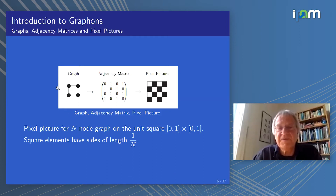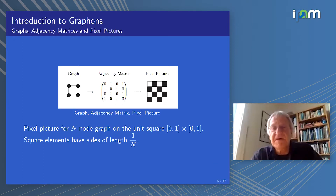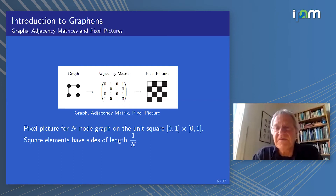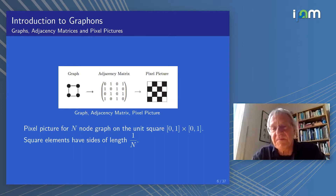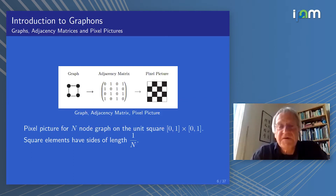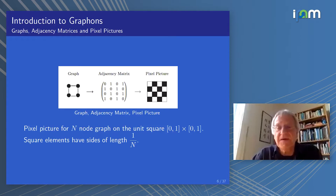If we consider a graph with four nodes and four edges, and take an indexing of the nodes, we have the adjacency matrix displayed here. Taking a one-over-n division of the edges of the unit square, we construct a pixel picture with a black entry for a connection — which here is unweighted, either exists or doesn't. A one corresponds to a black square and a zero maps to a blank white pixel. So we have the graph object, the adjacency matrix, and the pixel picture — for n equals four, where the square elements have sides of length one-quarter.